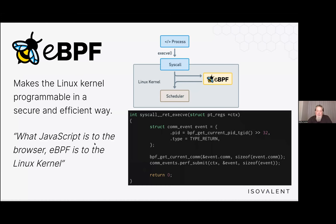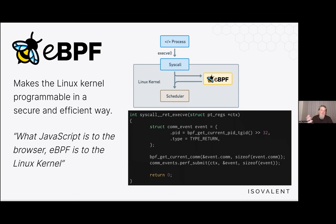eBPF is a way to make the Linux kernel programmable in a secure and efficient way. It's secure because an eBPF program is statically analyzed before it is injected into the Linux kernel, and it is efficient because it runs at native kernel speed. eBPF allows us to see API calls to the Linux kernel — when I open a file, open a new network socket, or make a connection — and gather context about whether those calls were successful and what the metadata around them was.